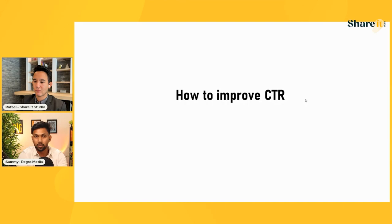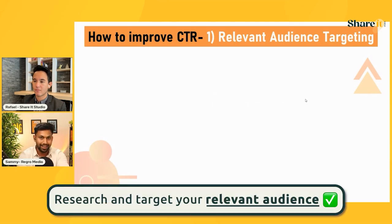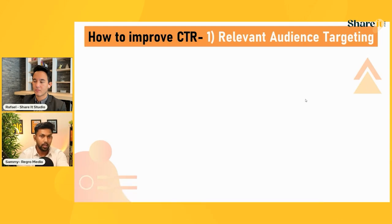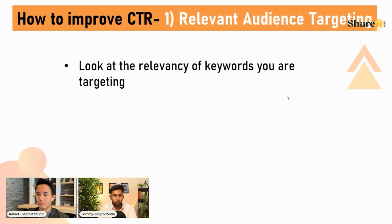How do we improve CTR? The first thing is to check whether you're targeting a relevant audience and whether the keywords you're targeting are relevant for you. The way we do it is we take the top 10 competitors, identify their top ASINs, and then verify that a minimum of three of those competitors rank on the first page for the keyword with a search volume of more than 300 — that justifies that the keyword is relevant.